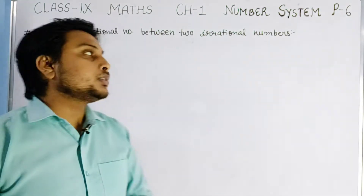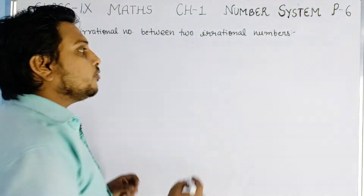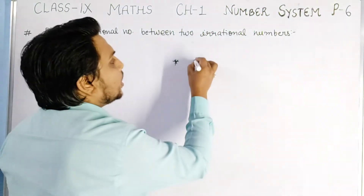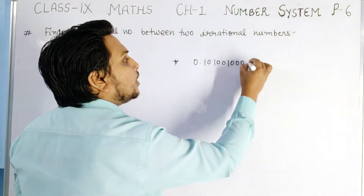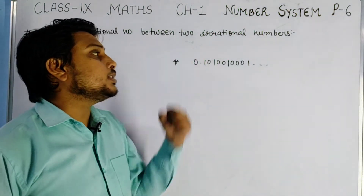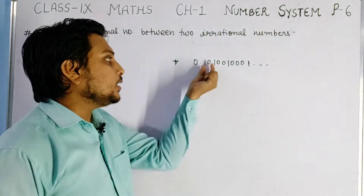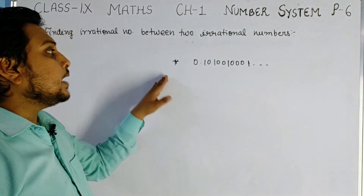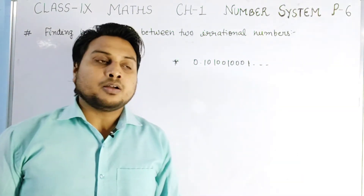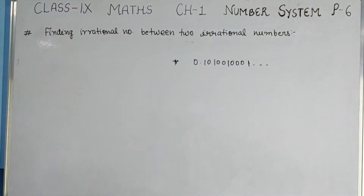If there are two irrational numbers, how we can find irrational numbers between them - we will see more about that. The proper method to write irrational numbers: for example, 0.101001001001 and so on. These are non-terminating and the same block is not repeating - here it is 10, then 100, then 1000 and so on - so this is an irrational number. One example already covered was: find 5 irrational numbers between 2 and 3.